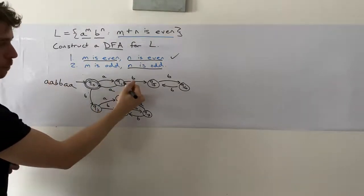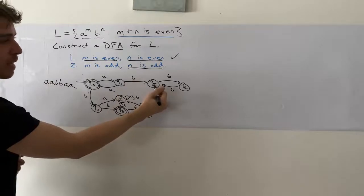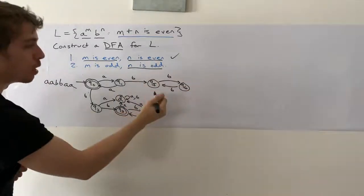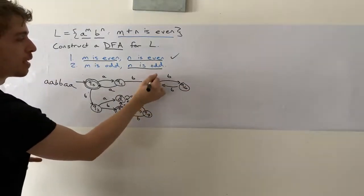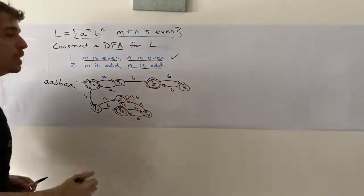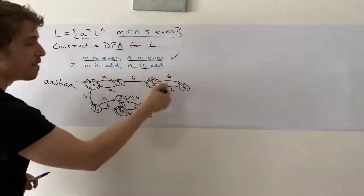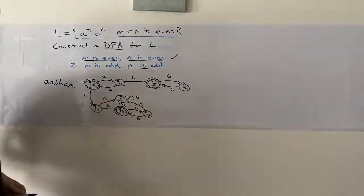And every two more, we're going to get an odd number of B's. So one plus an even number is, of course, odd. So that means that in Q5, we should accept.